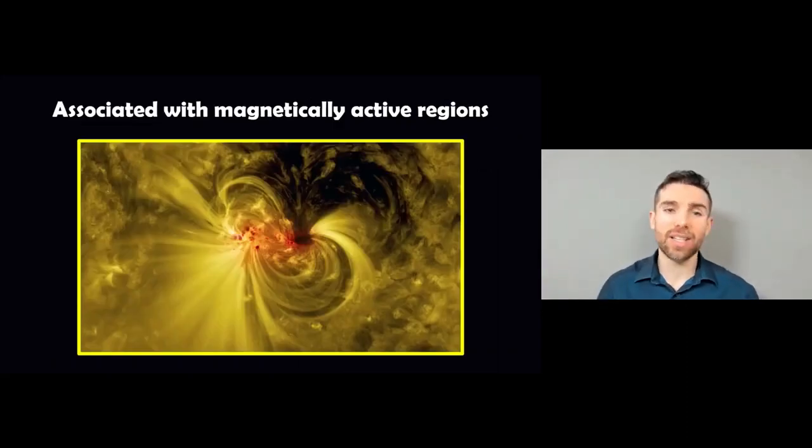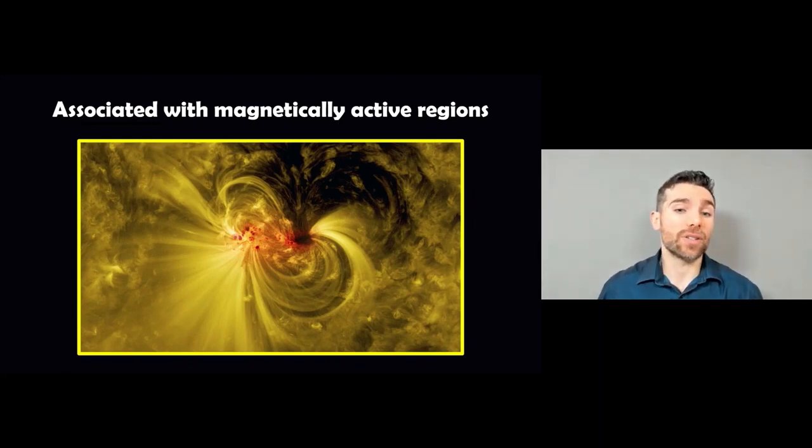They are generally associated with magnetically active regions. This is in a different wavelength looking more at the outer layers of the sun. As you come up further out into more of the atmosphere, you'll see these sorts of structures, and these will be located in the same area as the sunspots.